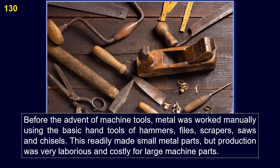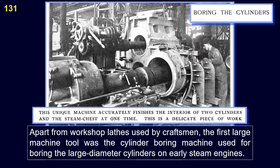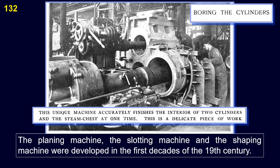Before the advent of machine tools, metal was worked manually using the basic hand tools of hammers, files, scrapers, saws, and chisels. This readily made small metal parts, but production was very laborious and costly for large machine parts. Apart from the workshop lathe used by craftsmen, the first large machine tool was the cylinder boring machine, used for boring the large-diameter cylinders on early steam engines. The planing machine, the slotting machine, and the shaping machine were developed in the first decades of the 19th century.